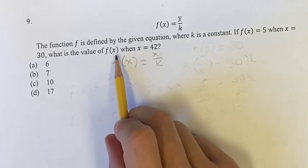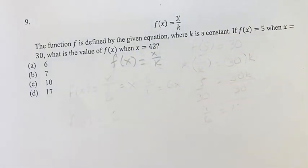And we're asked, what is the value of f(x) when x is 42? So normally, we would just plug in 42 and get our answer. However, since we don't know the value of k, we're going to have to find that first, and then we'll be able to find our answer.